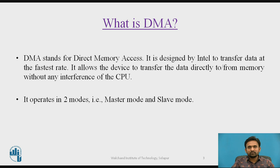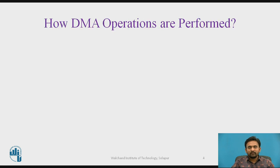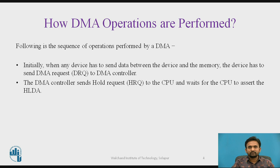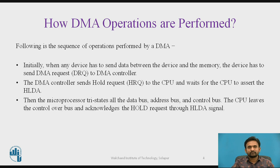It operates in two modes: master mode and slave mode. Regarding how DMA operations are performed, following is the sequence of operations. Initially, when any device has to send data between the device and the memory, the device sends a DMA request to the DMA controller — that is a DRQ request. The DMA controller sends a hold request to the CPU and waits for the CPU to assert the HLDA signal. The controller waits to get the acknowledgement from the CPU, that is called HLDA. Then the processor tri-states all the data bus, address bus, and control bus.